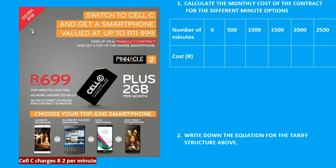Welcome Grade 12s to the tariff structure involving a cell phone contract. Looking at the advertisement on the left, we see a Cell C cell phone contract where you pay R699 for 24 months. You can choose any of the devices shown. In this contract you get 1000 minutes of airtime for free as part of the contract, so the 1000 minutes is free.